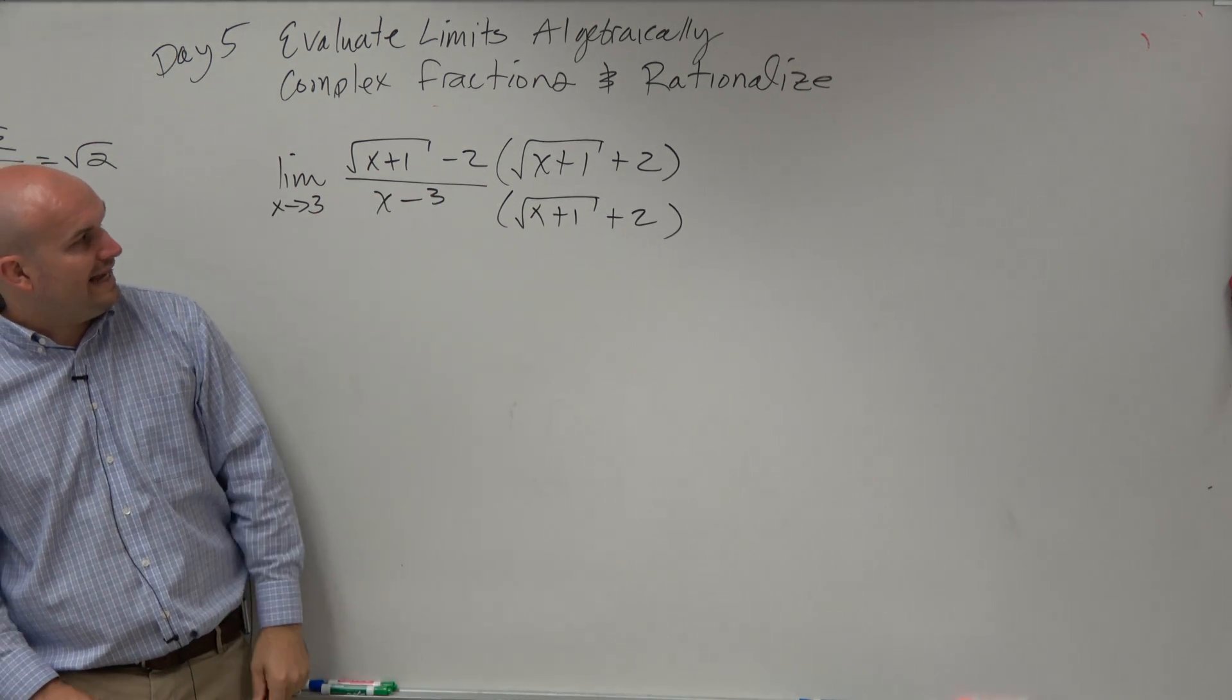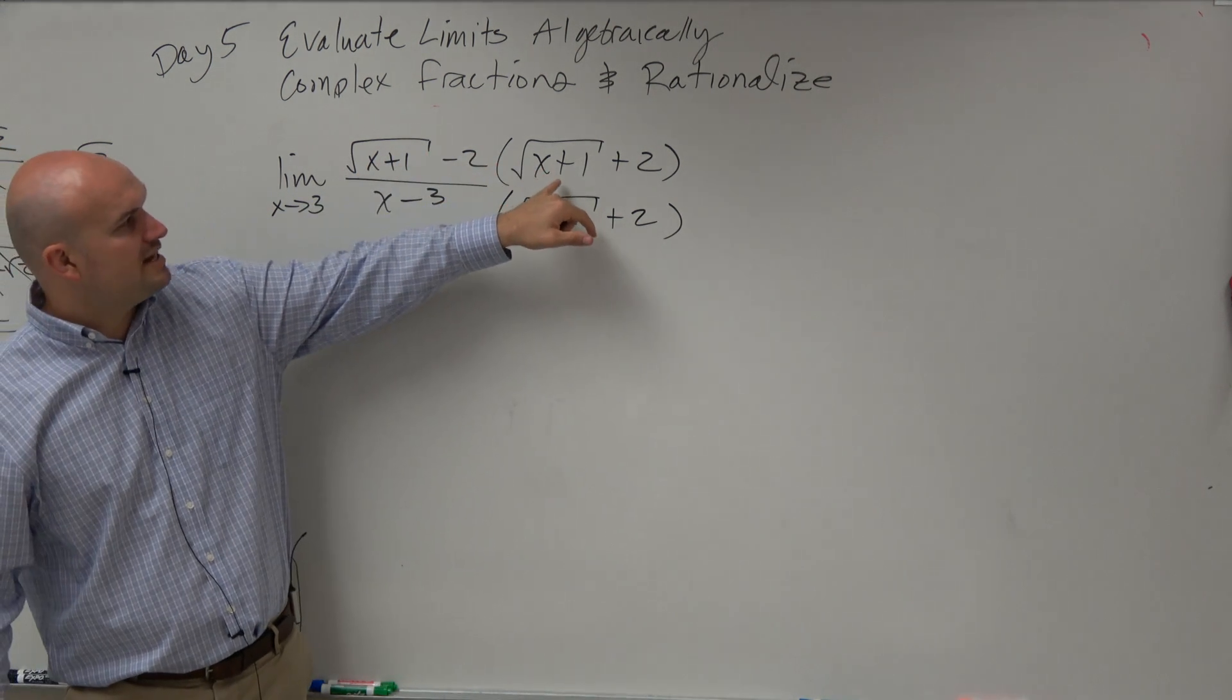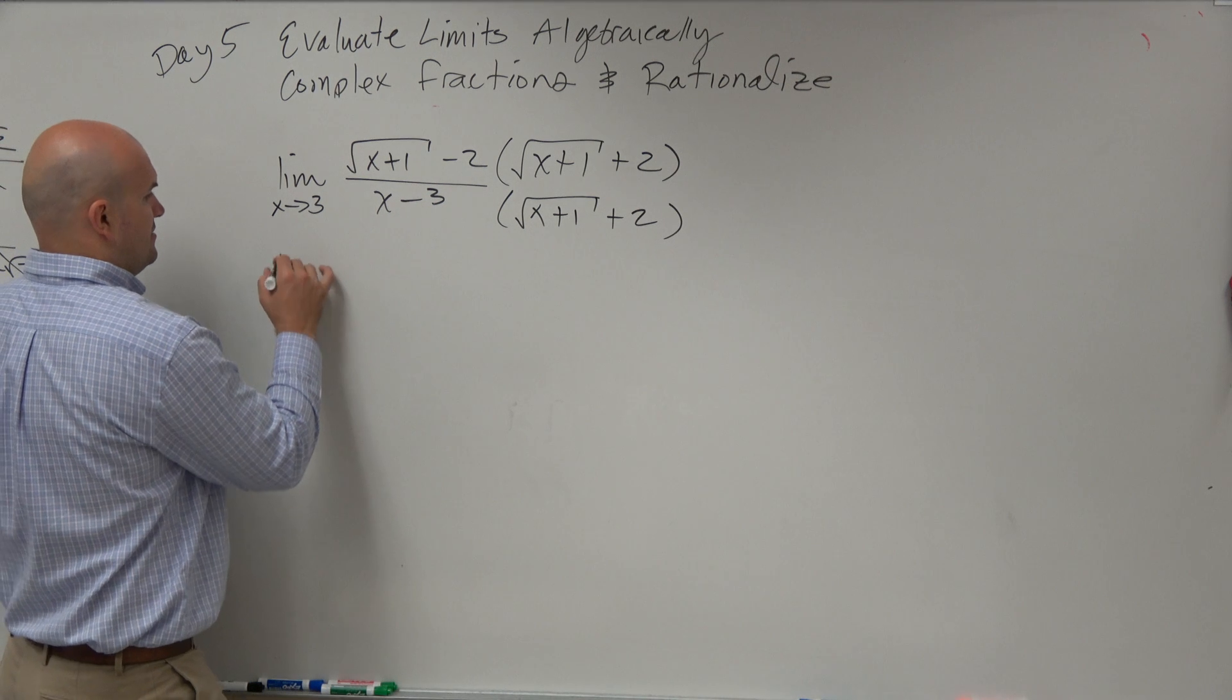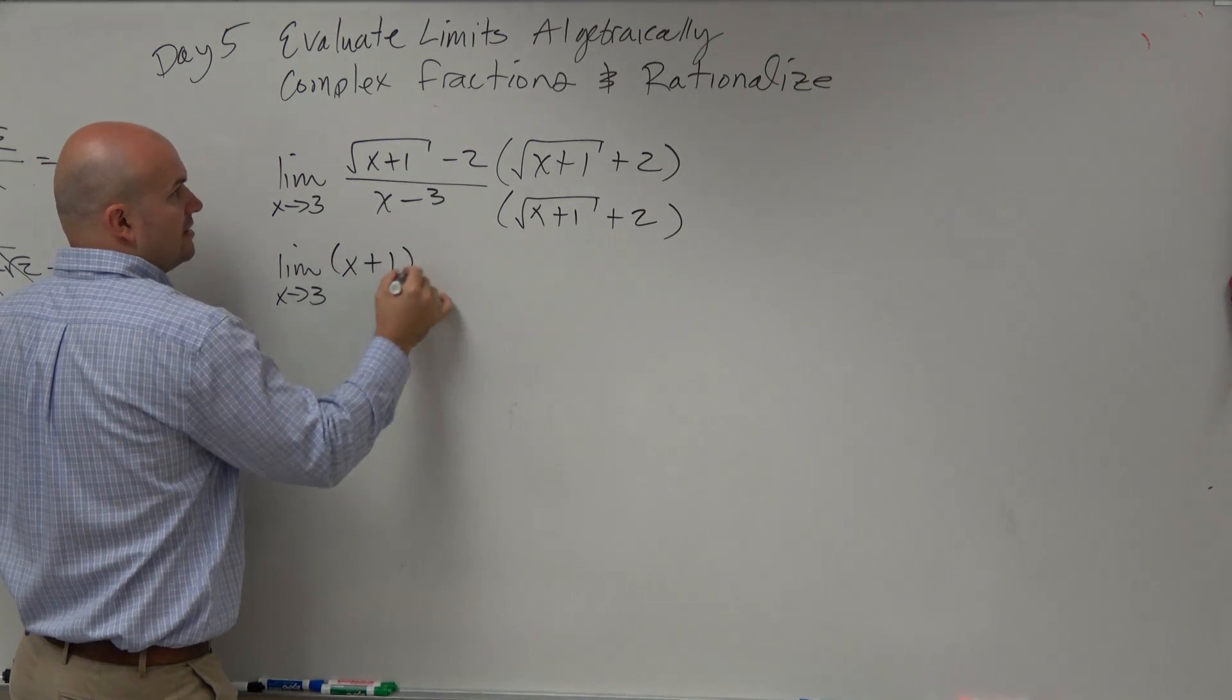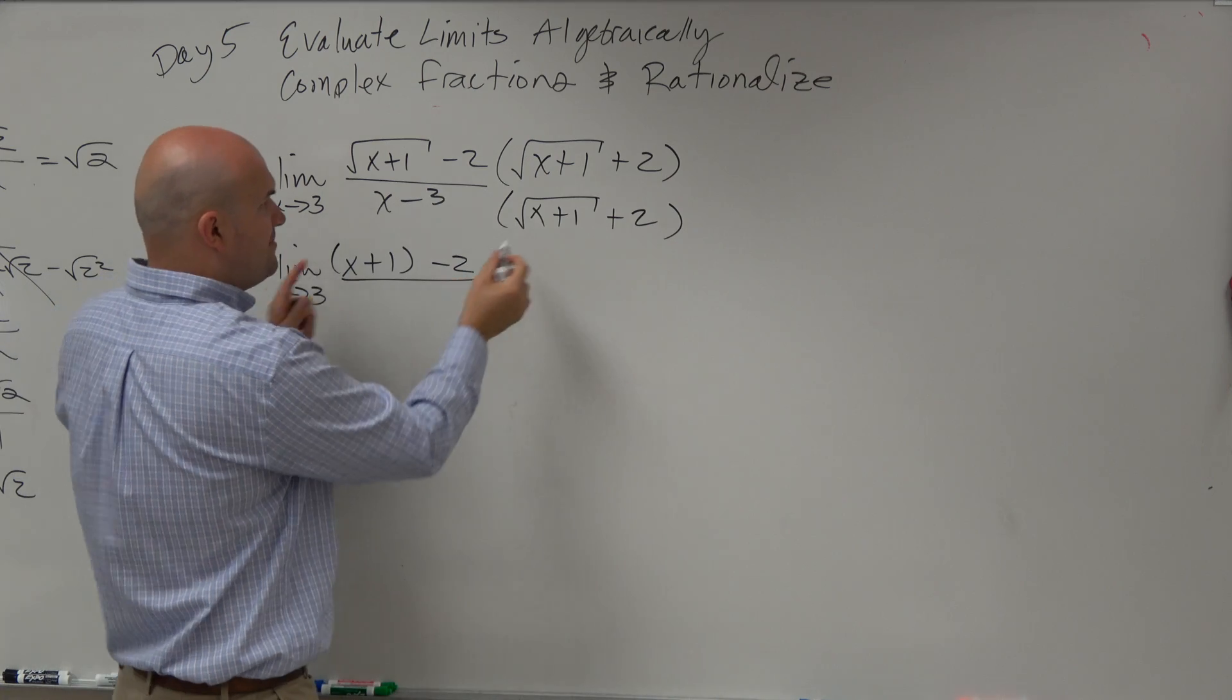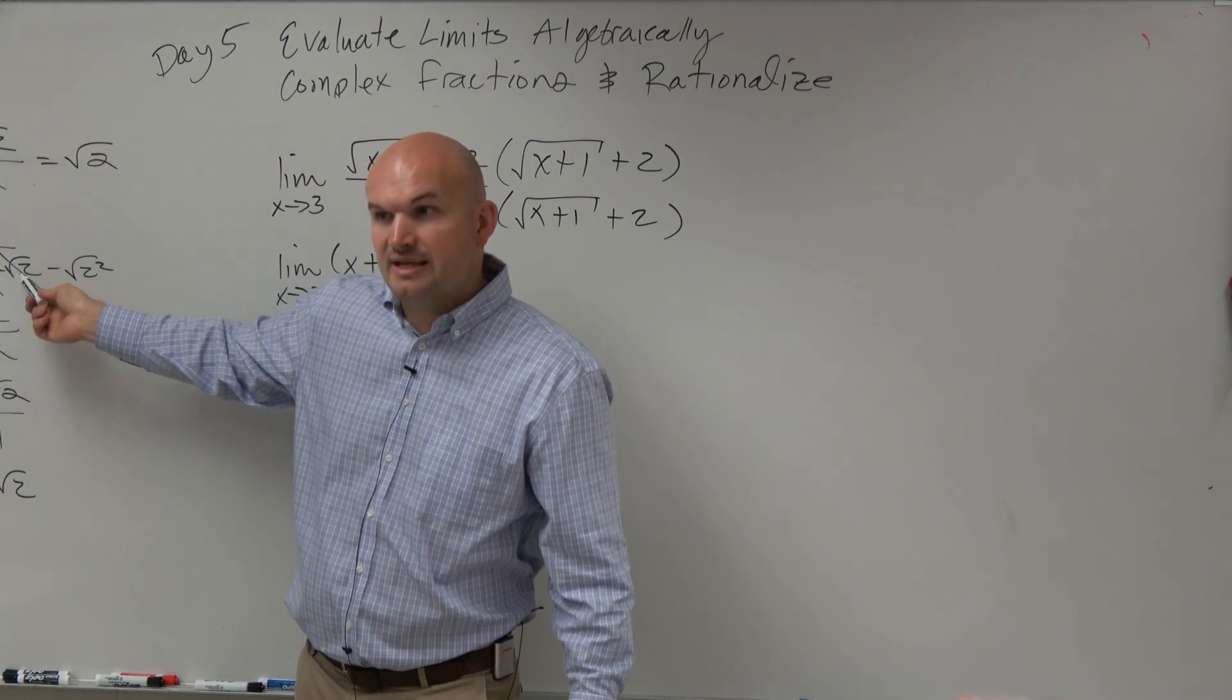So now we go ahead and multiply. What's the square root of x plus 1 times the square root of x plus 1? Just going to be x plus 1, right? Negative 2 times negative 2 is just going to be minus 4. Why am I skipping ahead? Why am I not doing the middle terms? Because what happened to the middle terms? They canceled off.